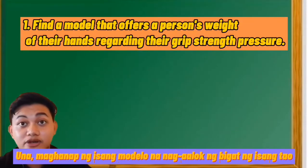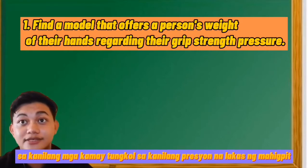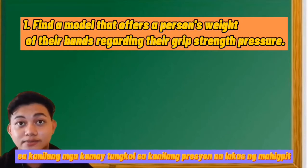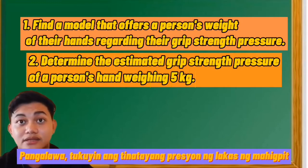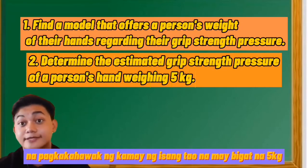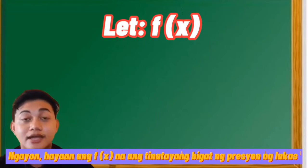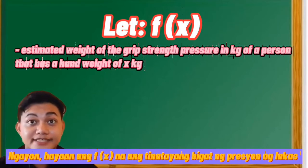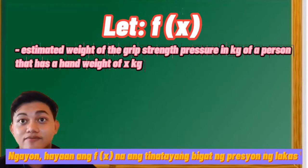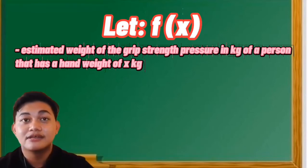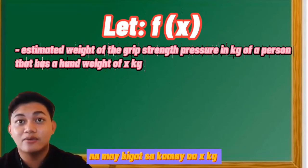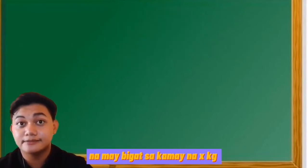First, we are going to find a model that describes a person's hand weight in relation to their grip strength pressure. Second, we need to determine the estimated grip strength pressure of a person's hand weighing 5 kg. Let f(x) be the estimated rate of the grip strength pressure in kg of a person with a hand weighing x kg.